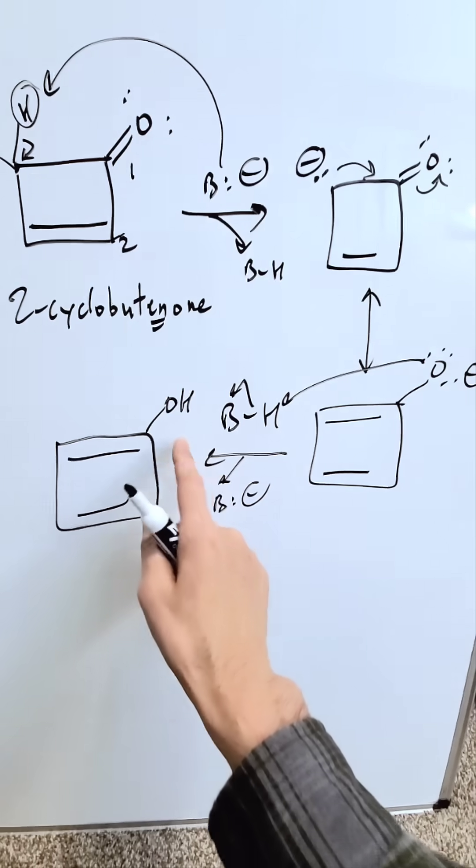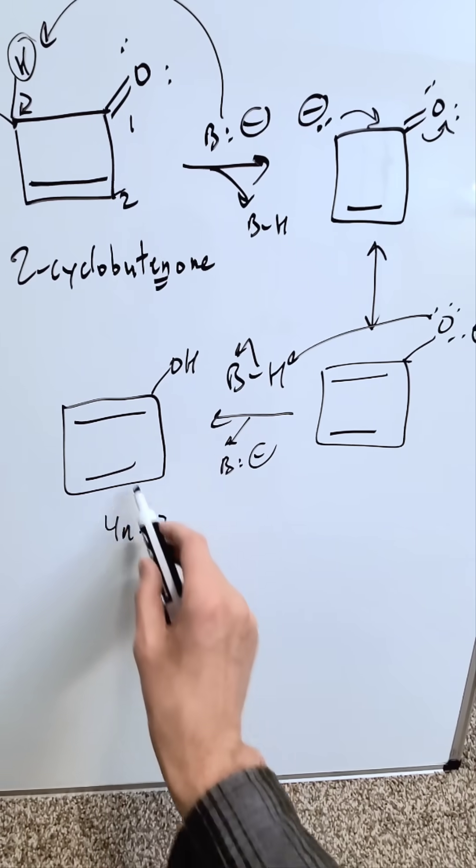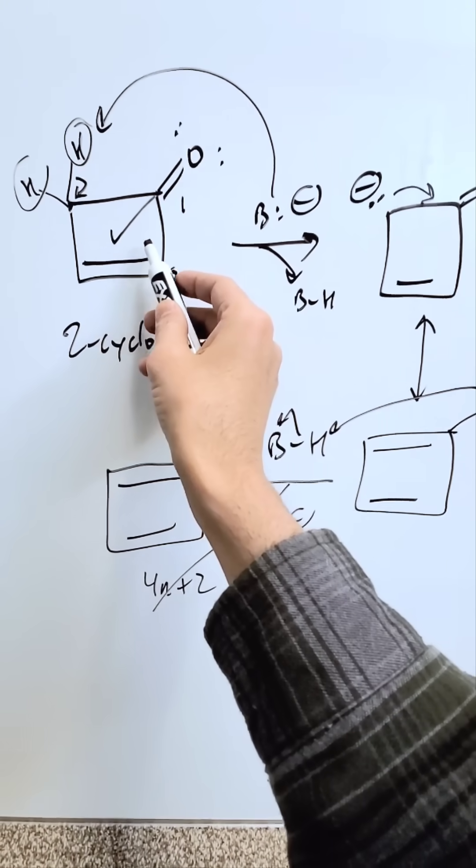We have our enol. We've gone here from the keto to the enol. If you look here in terms of aromaticity, 4n plus 2 rule, this fails it. If you look in terms of aromaticity, this succeeds that rule.